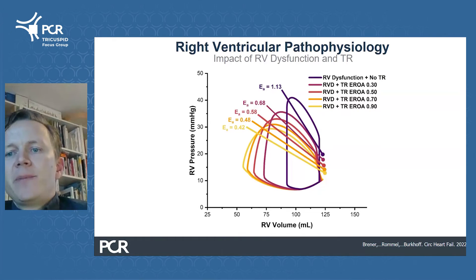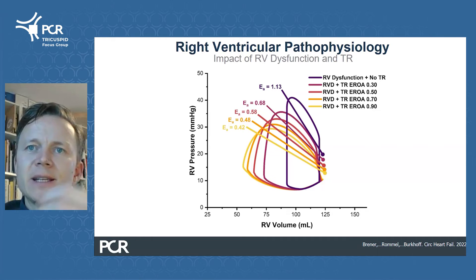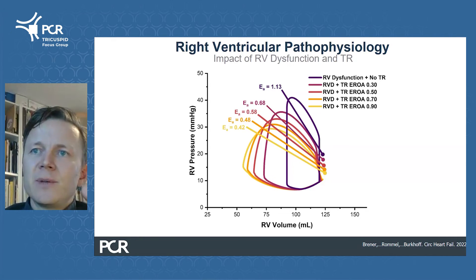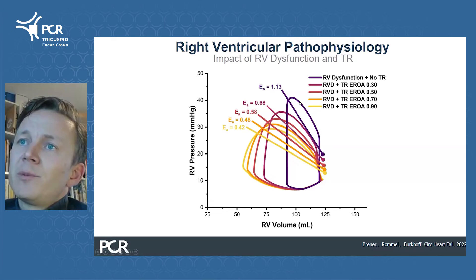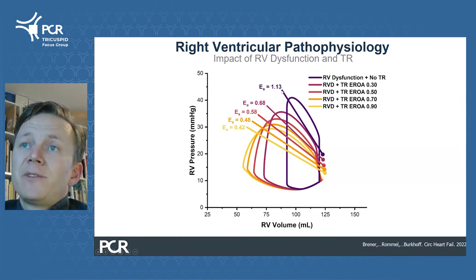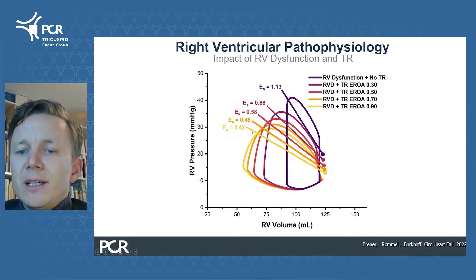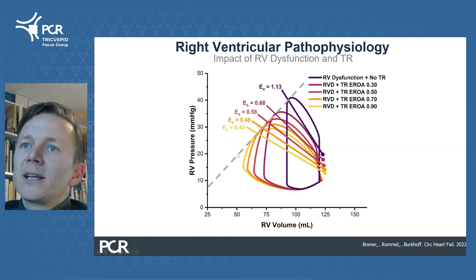Another interesting aspect when interpreting RV-PA coupling in TR patients is that the presence of TR is associated with a reduction in RV afterload, since ejection occurs towards a low-impedance outlet — namely the right atrium. As illustrated in these pressure-volume loops, from no TR in dark purple to torrential TR in yellow, the effective arterial elastance decreases in slope, meaning afterload is decreasing. Contractility is not expected to change significantly, and all this summarizes the mechanisms by which TR can create right heart failure, namely volume overload.